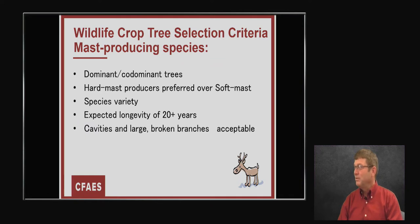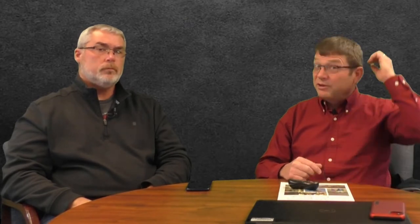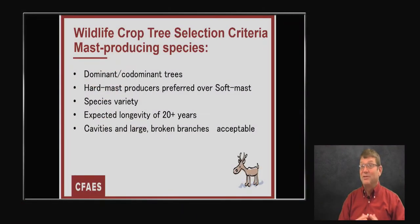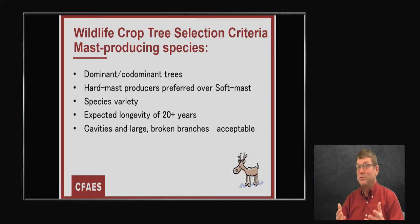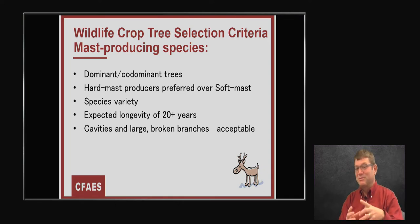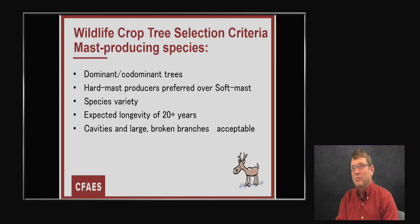Soft mast would be something like black cherry or persimmon — real soft and perishable. It's good for nutrition but doesn't hang around very long. It's more of a fruit, like pawpaw or black cherry. For wildlife, species variety is also important because just like humans, wildlife need a variety in their diet to get their nutrition, and they need it seasonally. If we have all the same species that's only available for a month or two, it wouldn't be good for those species later on. Also, dead branches or cavities in a tree provide nesting sites, which is beneficial for wildlife even if it's a sign of some decay.